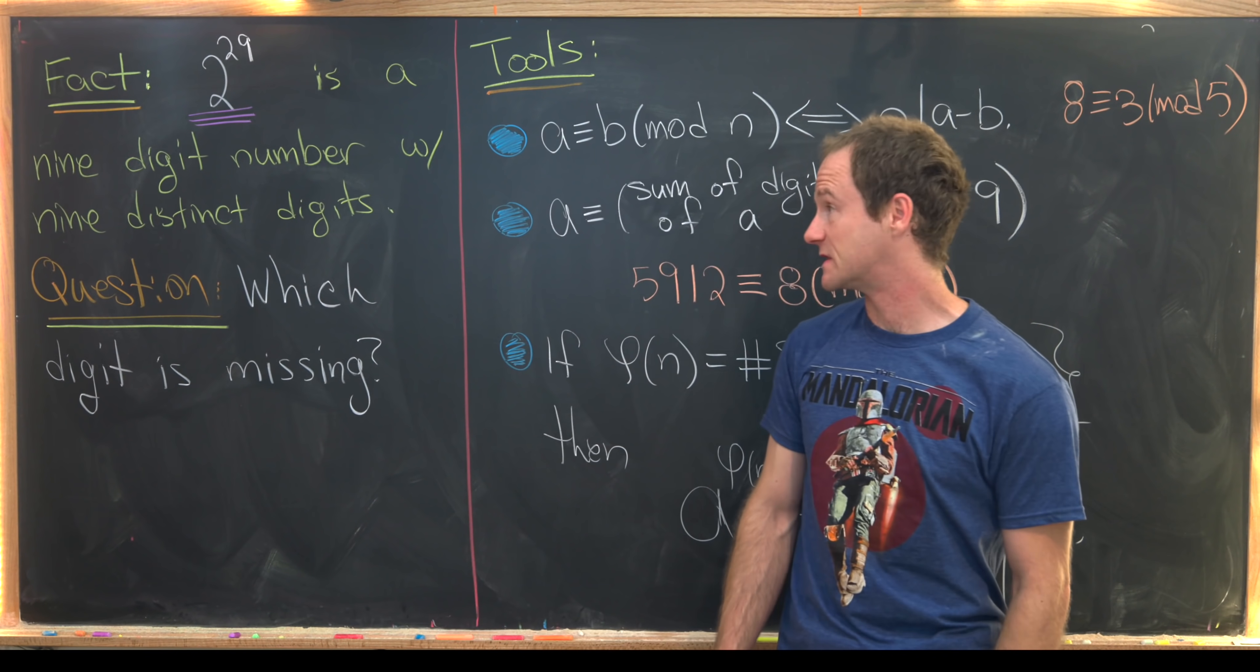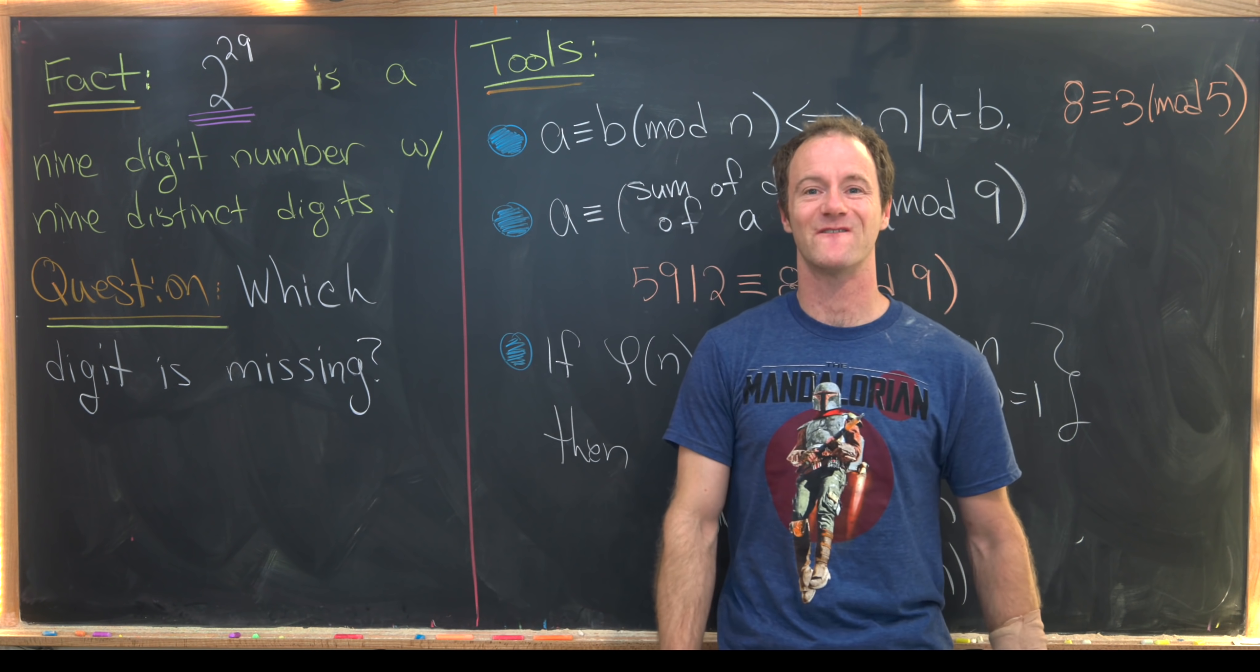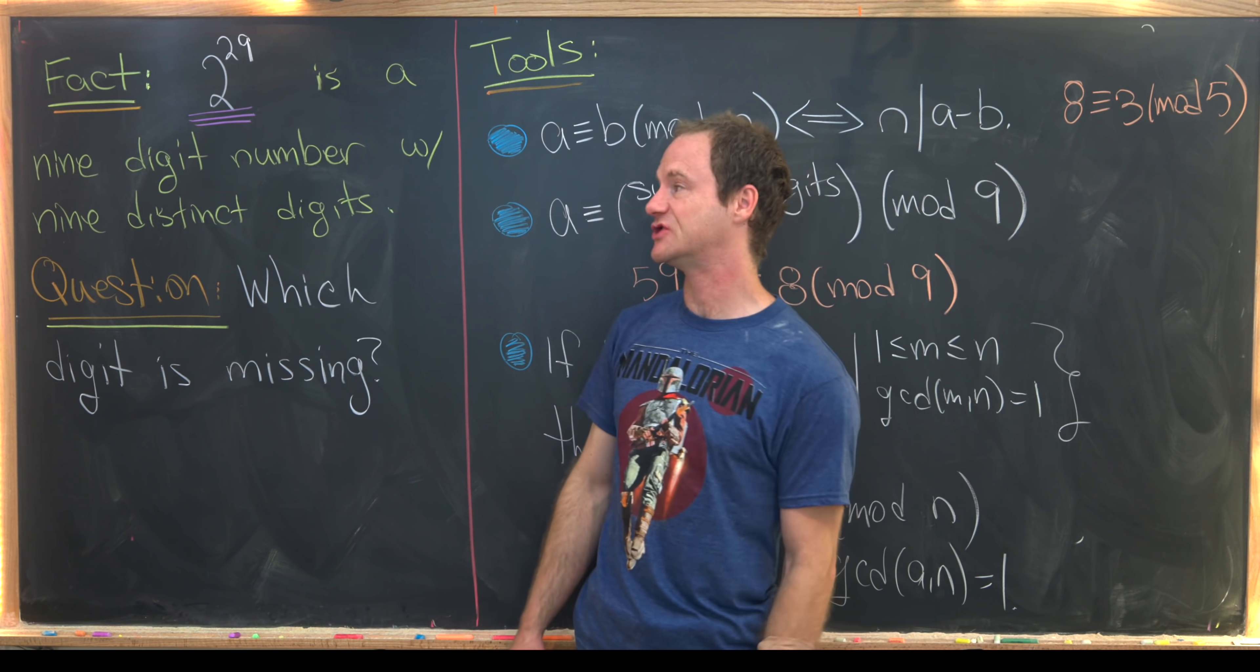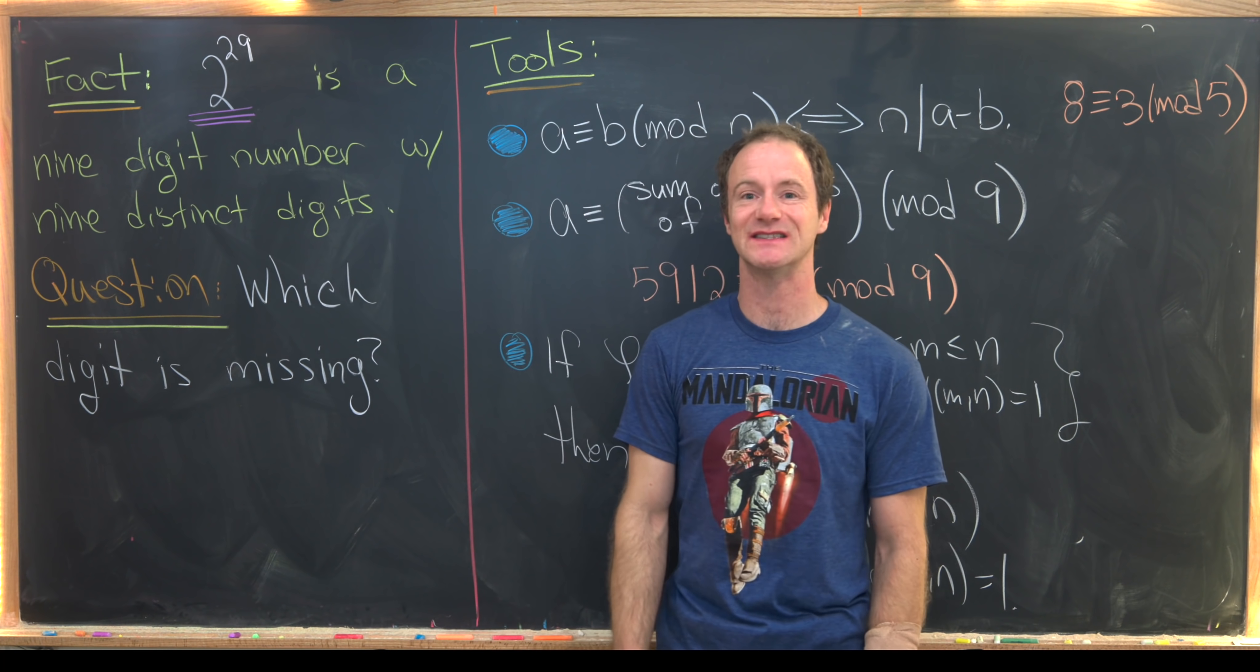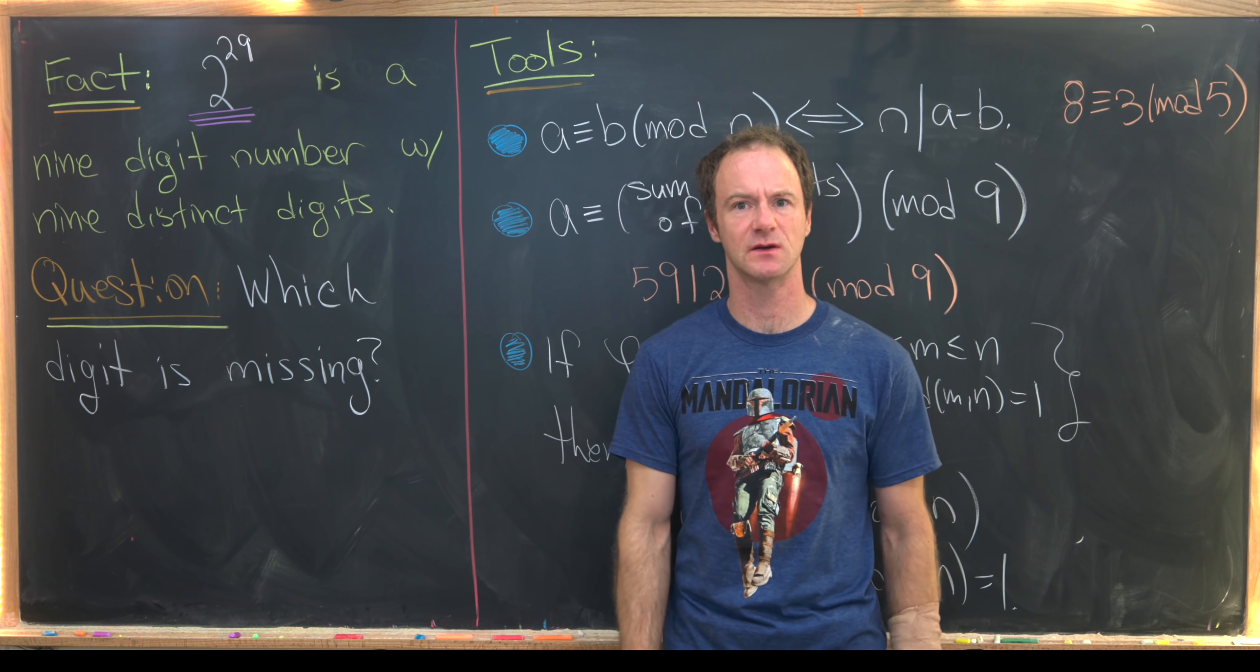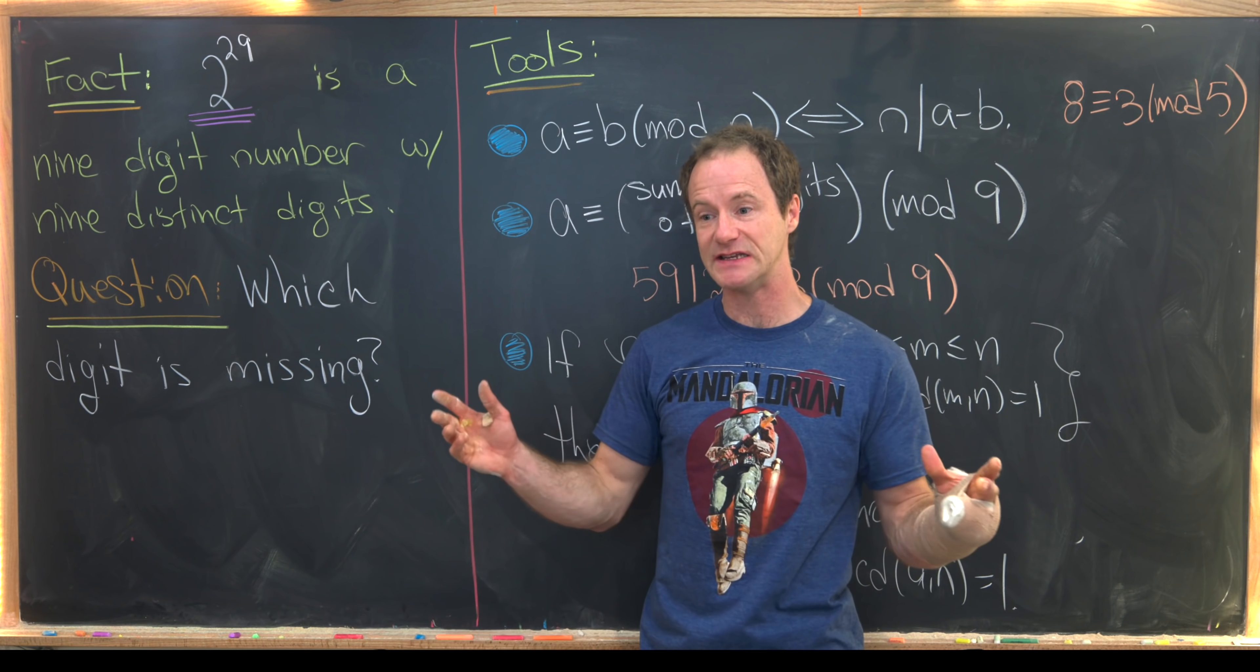Here I've got a really famous number puzzle for you. We have the following fact to start off: 2 to the power 29 is a nine-digit number, and furthermore, each of these nine digits is distinct. Then our question is, which digit is missing? In other words, 2 to the 29 has nine digits from the set zero to nine.